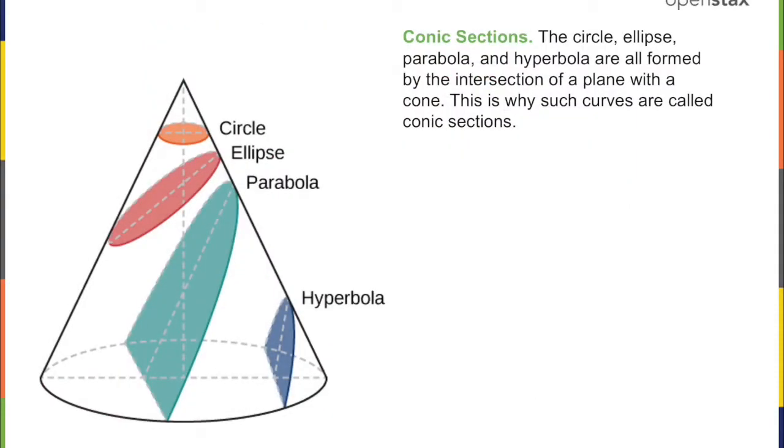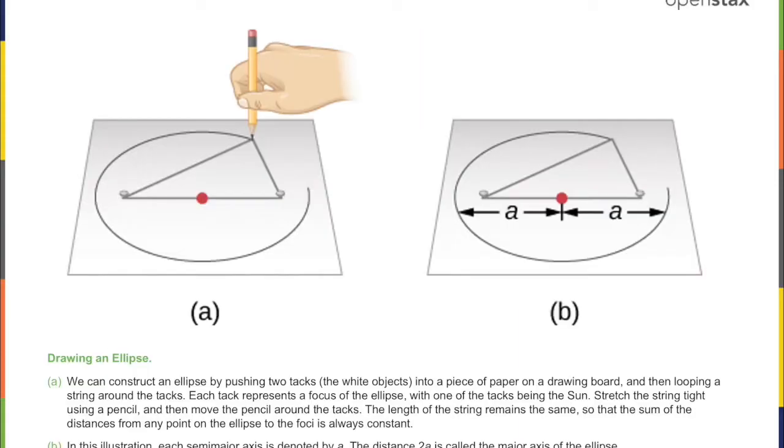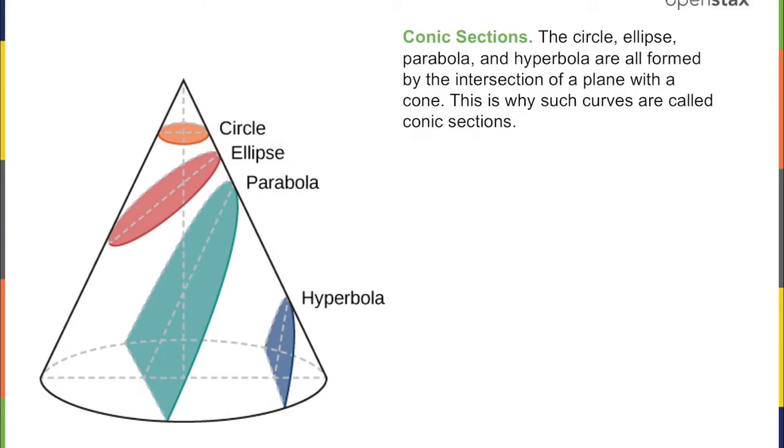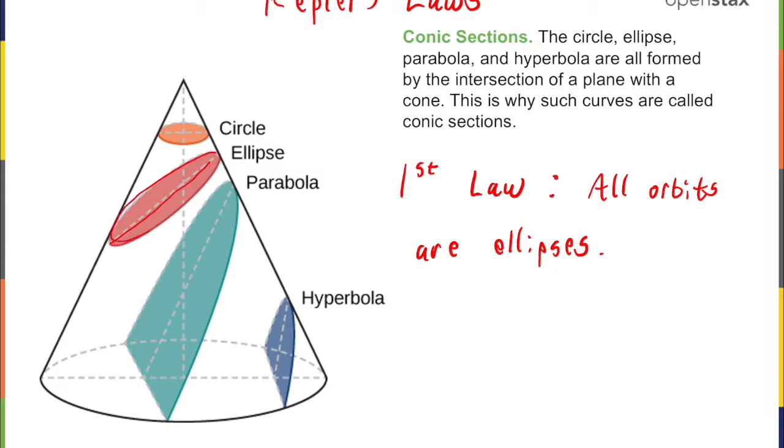Let's talk about Kepler's three laws of planetary motion. The first law of planetary motion is that all orbits are ellipses. And these are Kepler's laws. The first law: all orbits are ellipses. Now what is an ellipse? An ellipse is this thing right here. It's a stretched out circle.